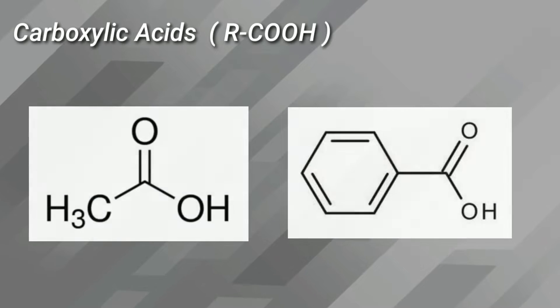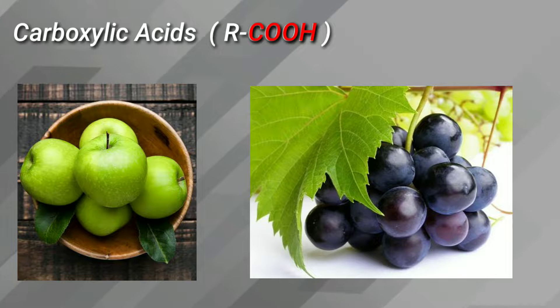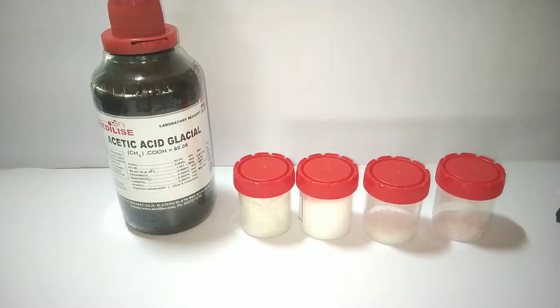Carboxylic acids are organic compounds with the COOH functional group. They occur naturally in citrus fruits like grapes and green apple. Vinegar is a dilute solution of acetic acid, which is also a carboxylic acid.